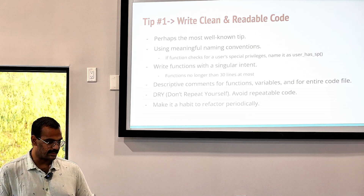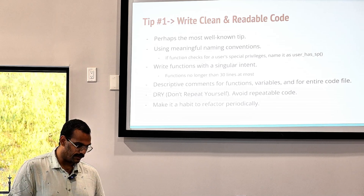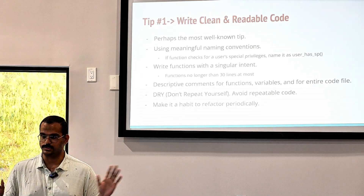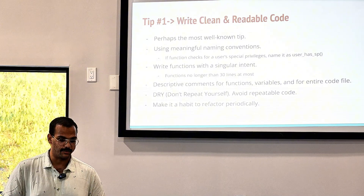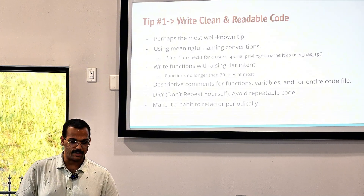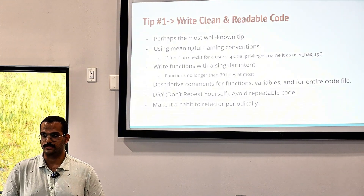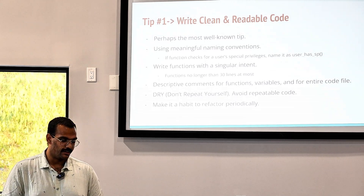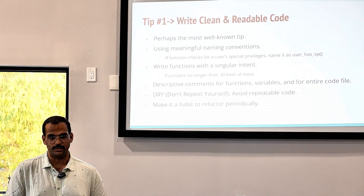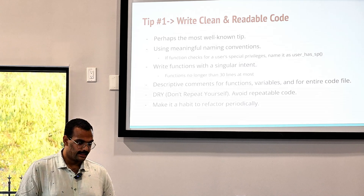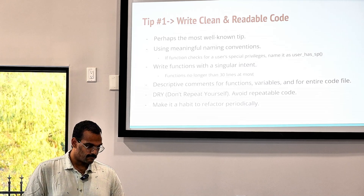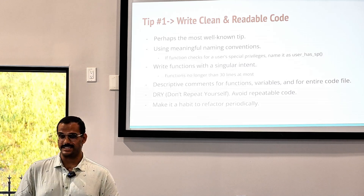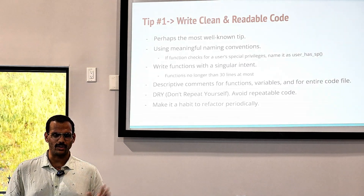A simple example: if you have a function that checks for a user's special privileges, you want to name it 'user has SB' — it tells you what the function does, instead of just saying 'function user' and leaving it at that. When it comes to functions, you want to make sure you write them with a singular intent.